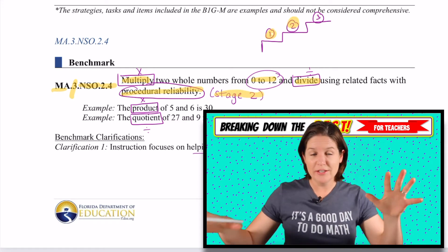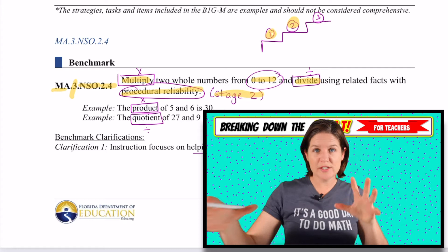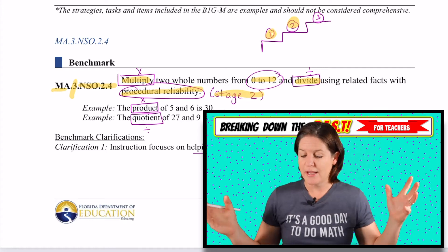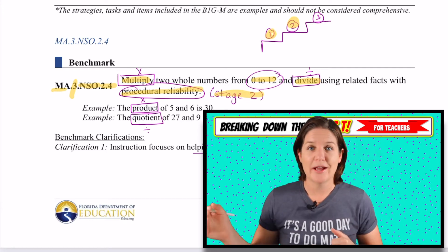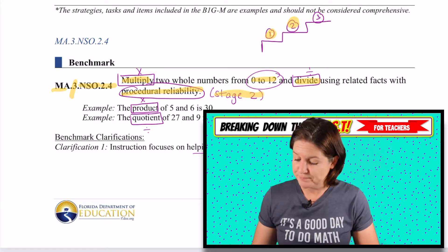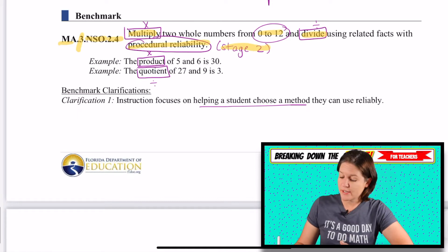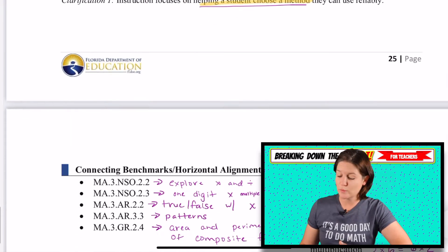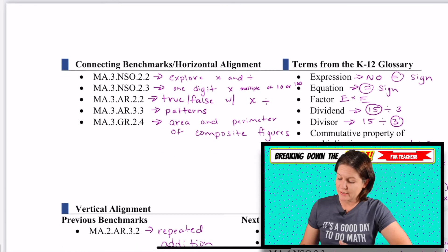We've used the concrete manipulatives and now we're working on the procedural reliability step, which means that the instruction focuses on helping a student choose the method that they can use reliably.